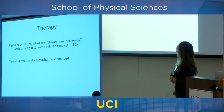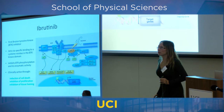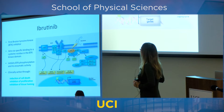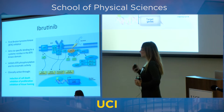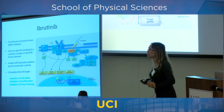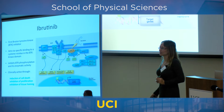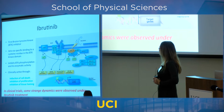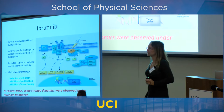Ibrutinib is a very clever compound that specifically binds to BTK — an enzyme involved in divisions and functioning of cancerous cells. Ibrutinib binds to BTK and eventually leads to cell death, so it works specifically against cancerous cells. It was a great breakthrough, but when clinical trials were conducted, some very strange things were happening in the blood of the patients involved.